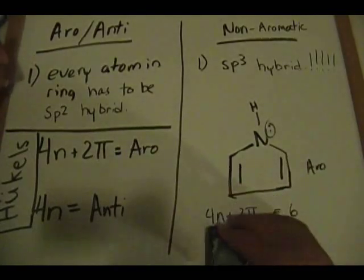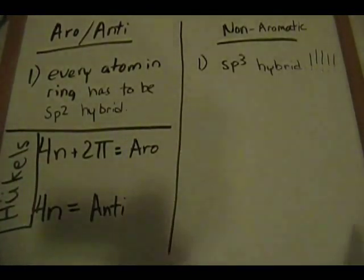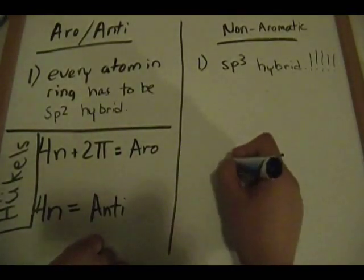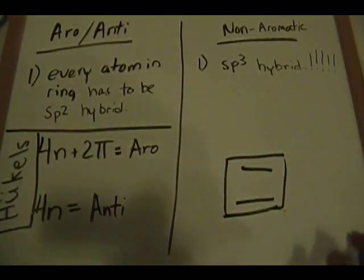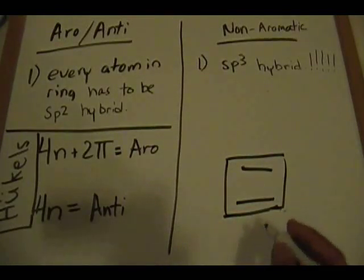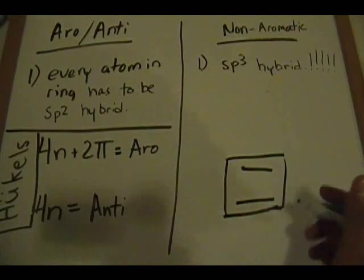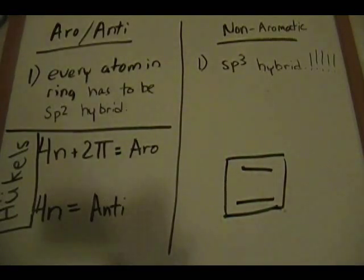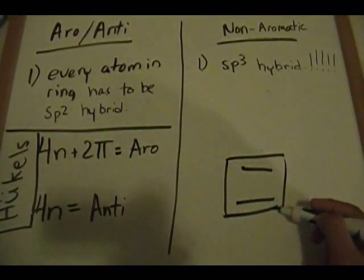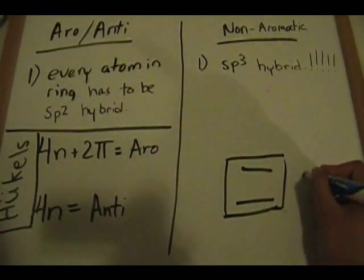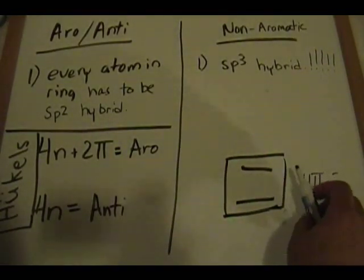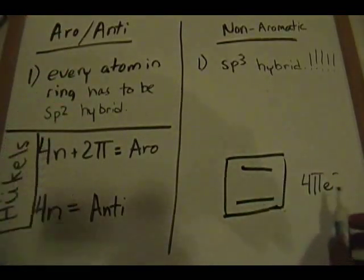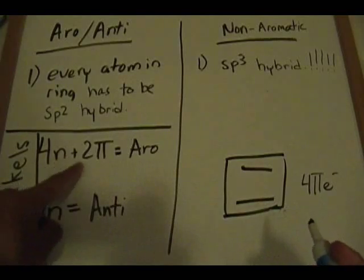Let's look at another example. What about cyclobutadiene — a four-membered ring with two double bonds? Is it aromatic, anti-aromatic, or non-aromatic? Identify the carbons: sp2, sp2, sp2, sp2, sp2, sp2, sp2. Counting the pi electrons: 2, 4 — so four pi electrons.